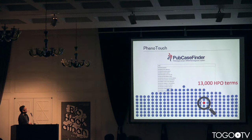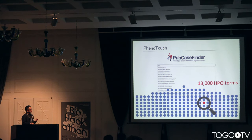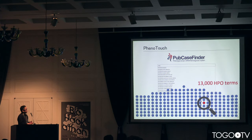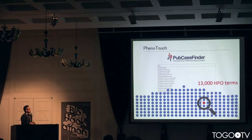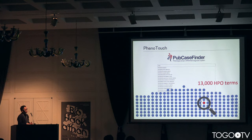Next, I introduce Phenotouch. Sometimes it is a little hard to search for appropriate phenotypes from 30,000 HPO terms by text search, because there are many synonyms and abbreviations of phenotypes that are not defined in human phenotype ontologies. So Phenotouch assists users to search for HPO terms in a different way.